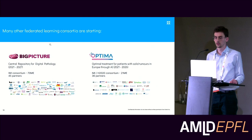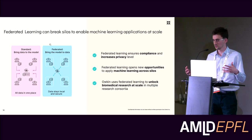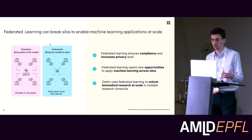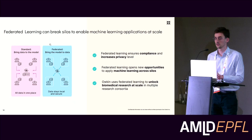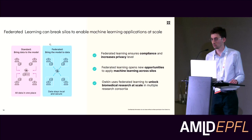Those were just two examples of consortia — there are many others starting, such as Big Picture and Optima. To sum up, federated learning connects different centers, each holding sensitive datasets, and makes machine learning models and data science quantities travel rather than the data itself. This ensures compliance and increases the privacy level. For highly regulated data, this opens new opportunities to apply machine learning across silos — and at Hawkin, we use it to unlock biomedical research at scale. Thank you for your attention; I'd be happy to take questions.